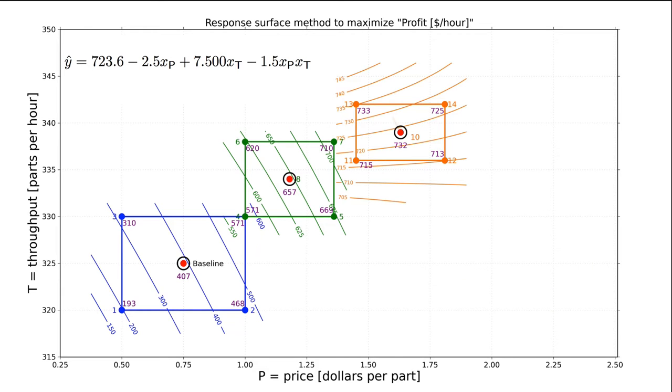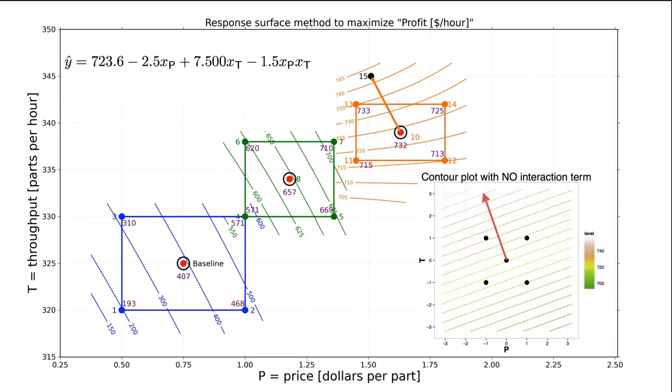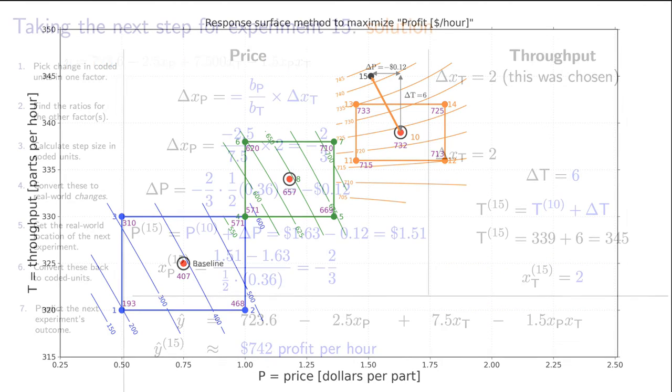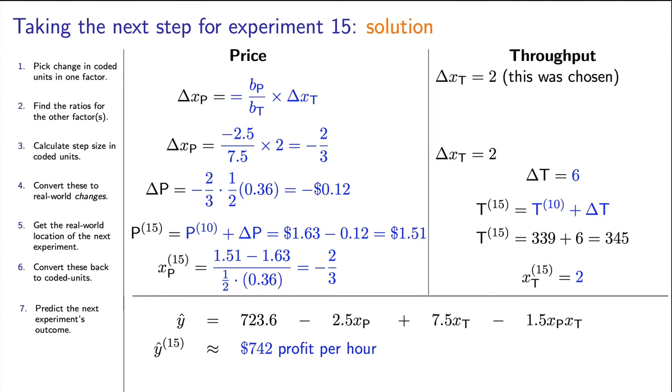Let's quickly go take a step in the direction for run number 15. And because you're good at this now, I'm going to take a step of delta Xt equal to size 2, and the corresponding delta Xp is equal to minus 2 thirds. You can do the rest of the calculations yourself and show that the predicted value of profit at this location is $742. When we run the actual experiment, we record a profit of $735. That's an overestimate of $7. This overestimate is comparable to the main effect. And we also have visual evidence now of curvature. This is starting to tell me that I should change my strategy.